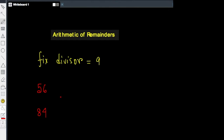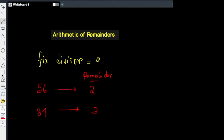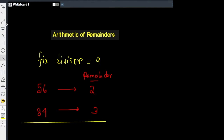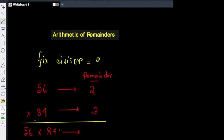If I divide 56 by 9, the remainder is 2. And if I divide 84 by 9, the remainder is 3. Now, what would happen if I divide 56 times 84 by 9? That is, what if I multiply these two numbers 56 and 84? Let's do that — let's multiply 56 and 84.